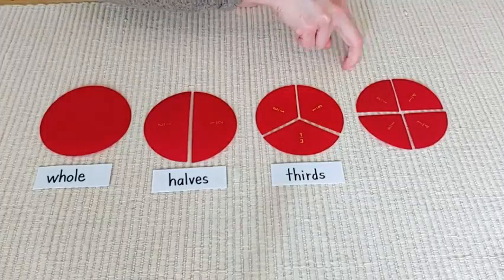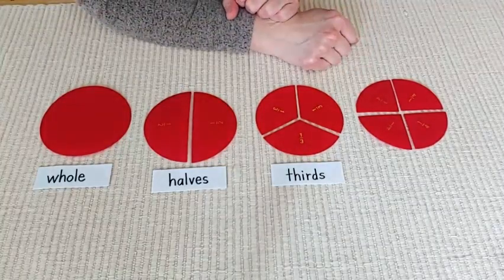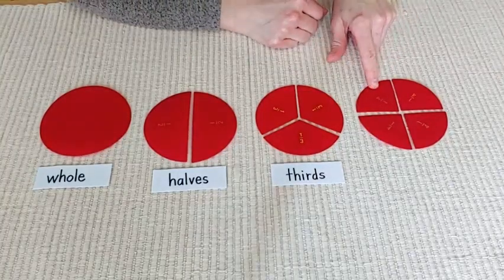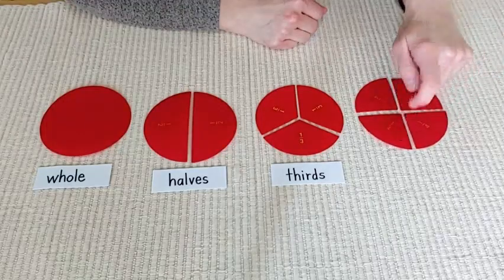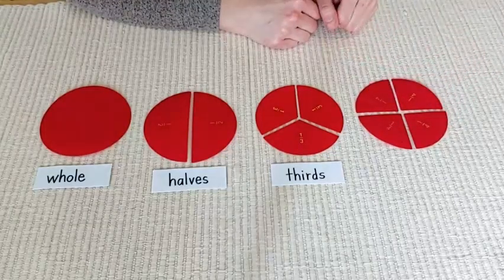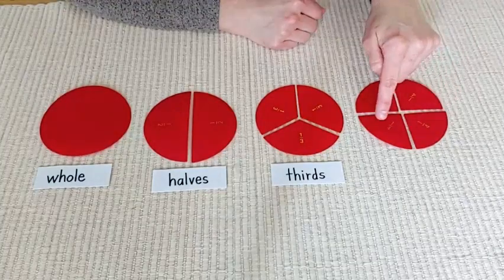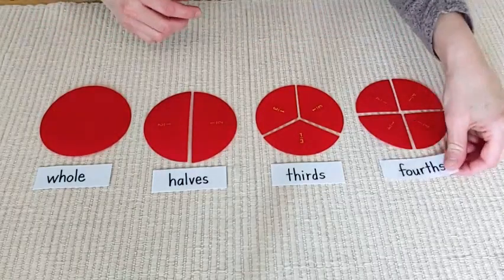Da-da-da-da-da-da-da-da! And the last, but not the least fraction, is the fourths family. We have one, two, three, four parts. And just like all the other houses, it's still one whole circle, but it's broken into four parts. We call that family the fourths family.